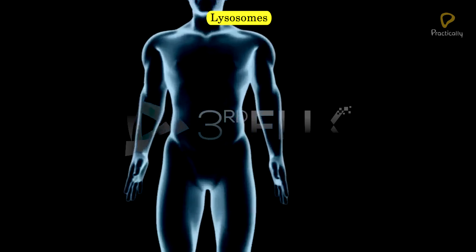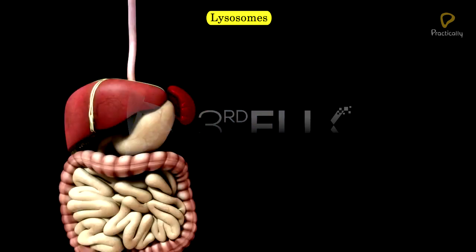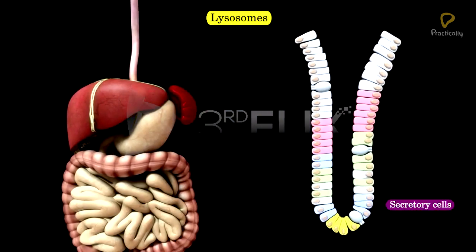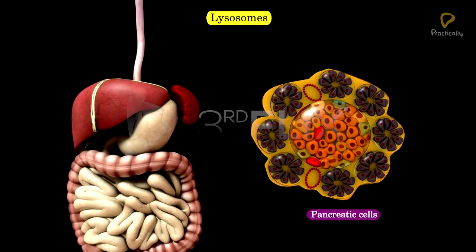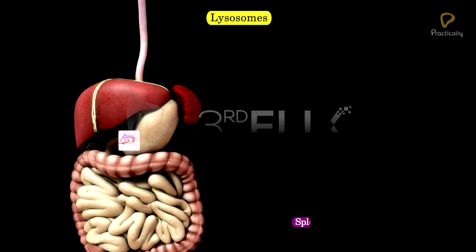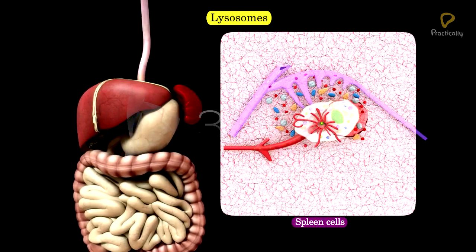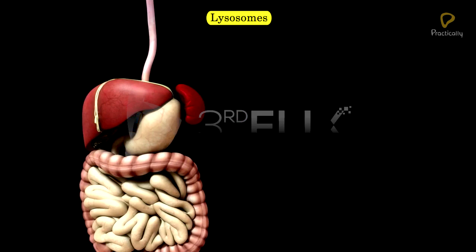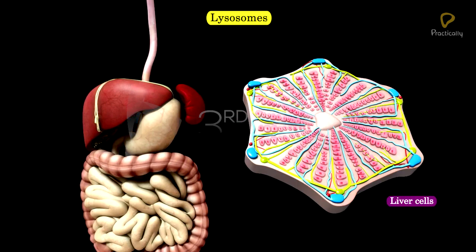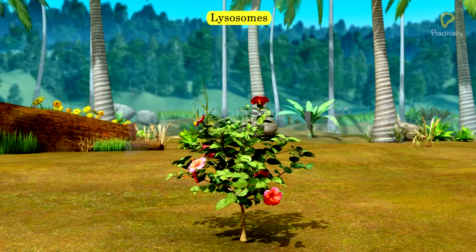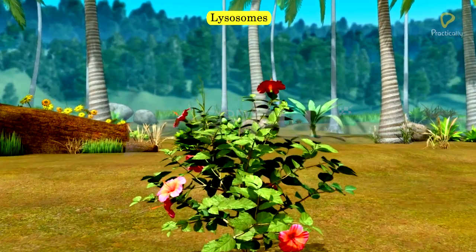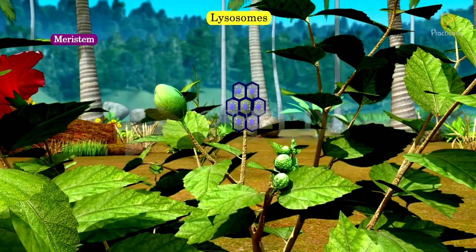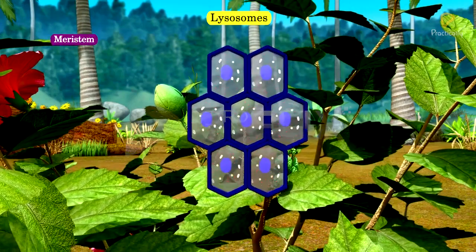Lysosomes are common in animal cells like secretory cells, pancreatic cells, spleen cells, leukocytes, and liver cells. Lysosomes are also found in plant cells like metastatic cells.